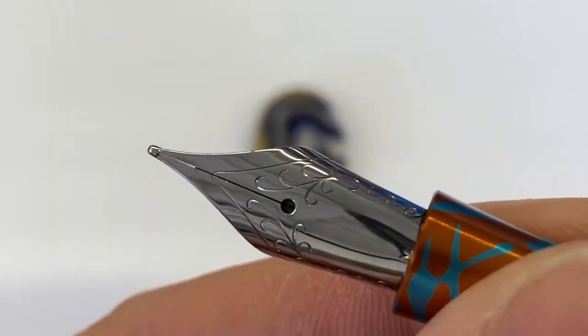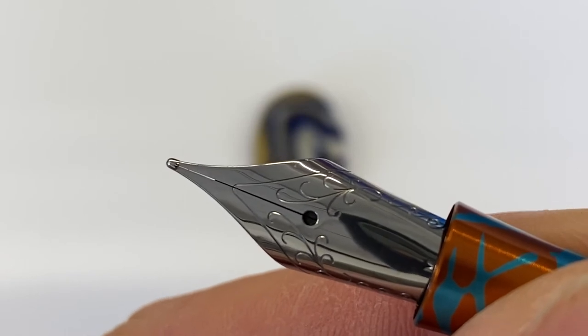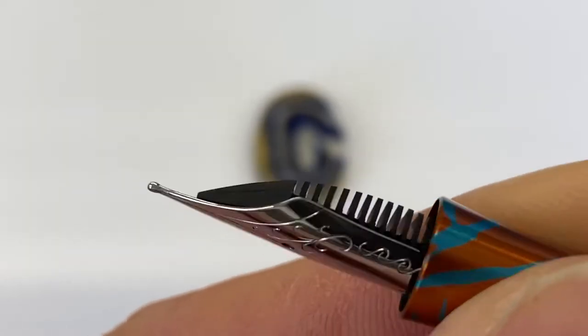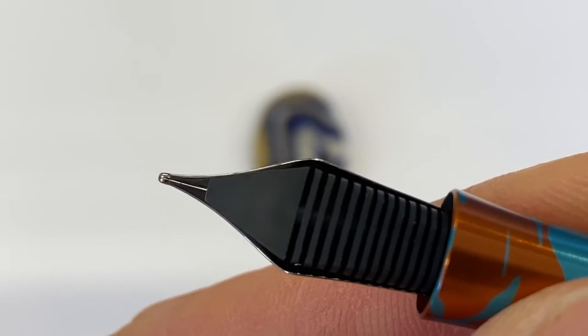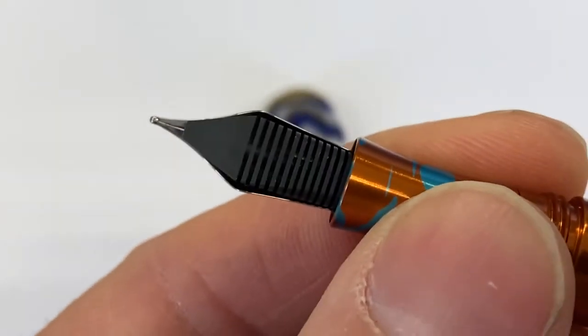But it is not in the tip of the nib and there is still nothing between those two tines. So we need to get the ink from the feed to the front of the pen. And I'm going to show you a cool trick for this today.